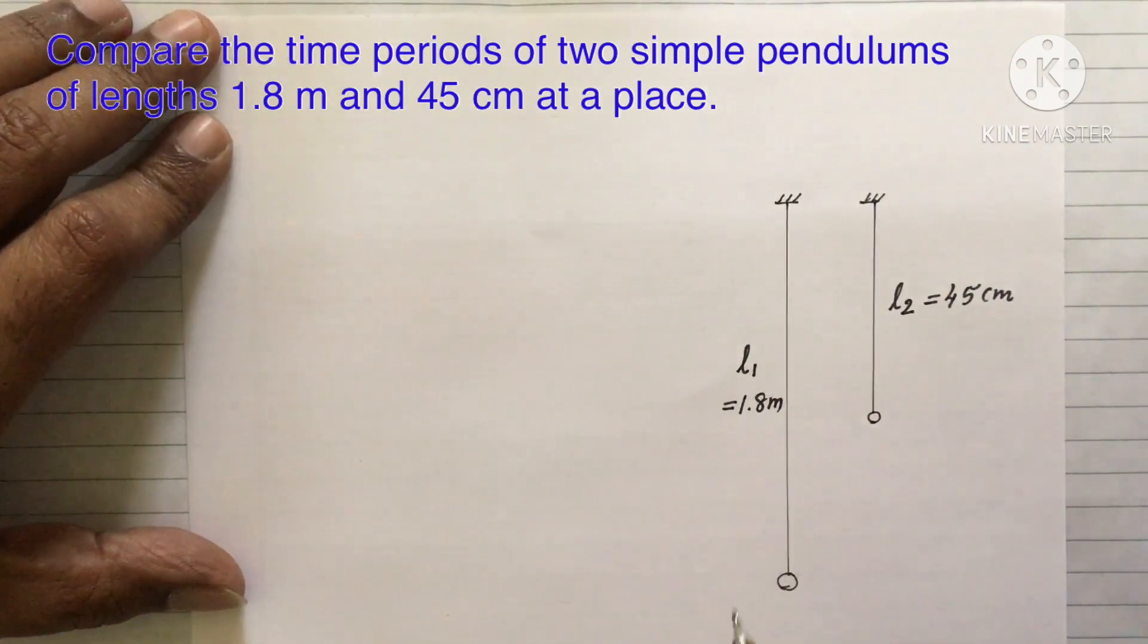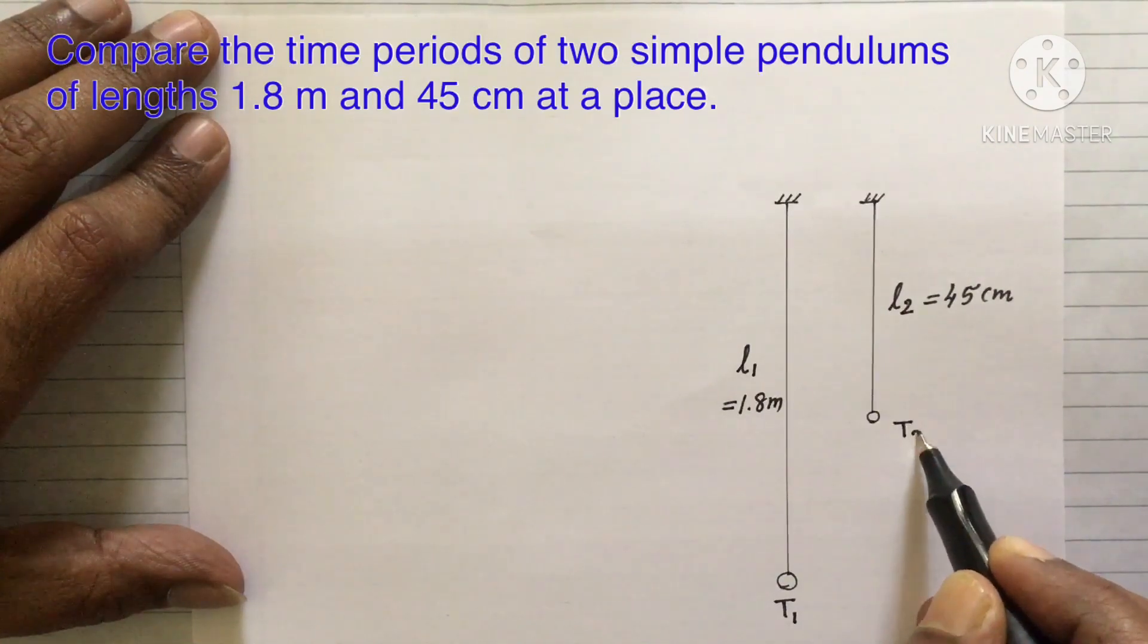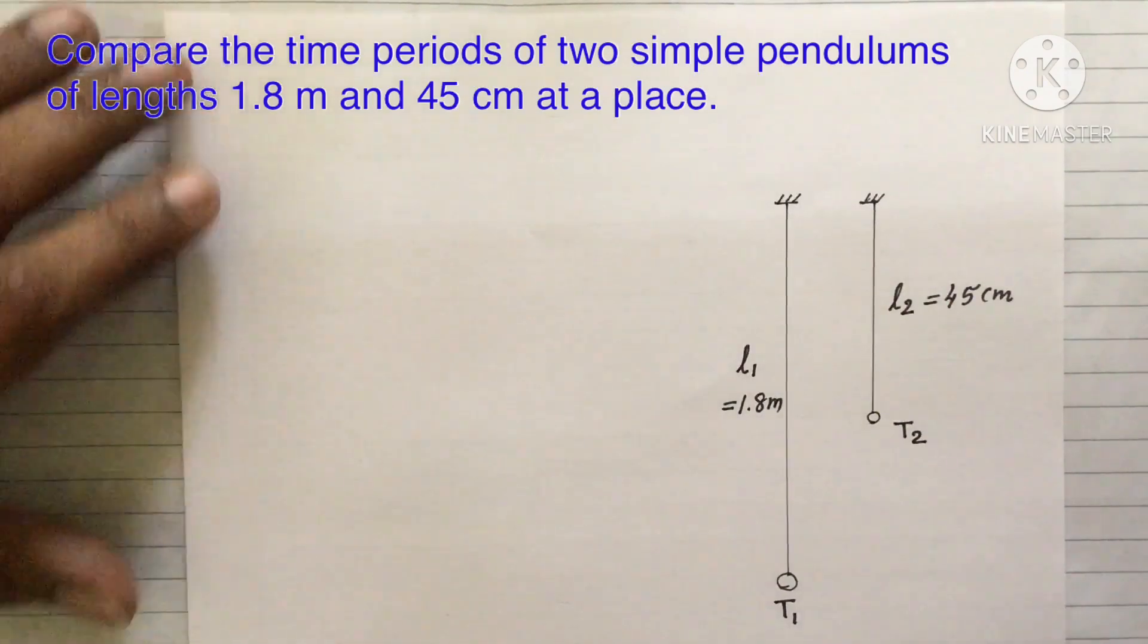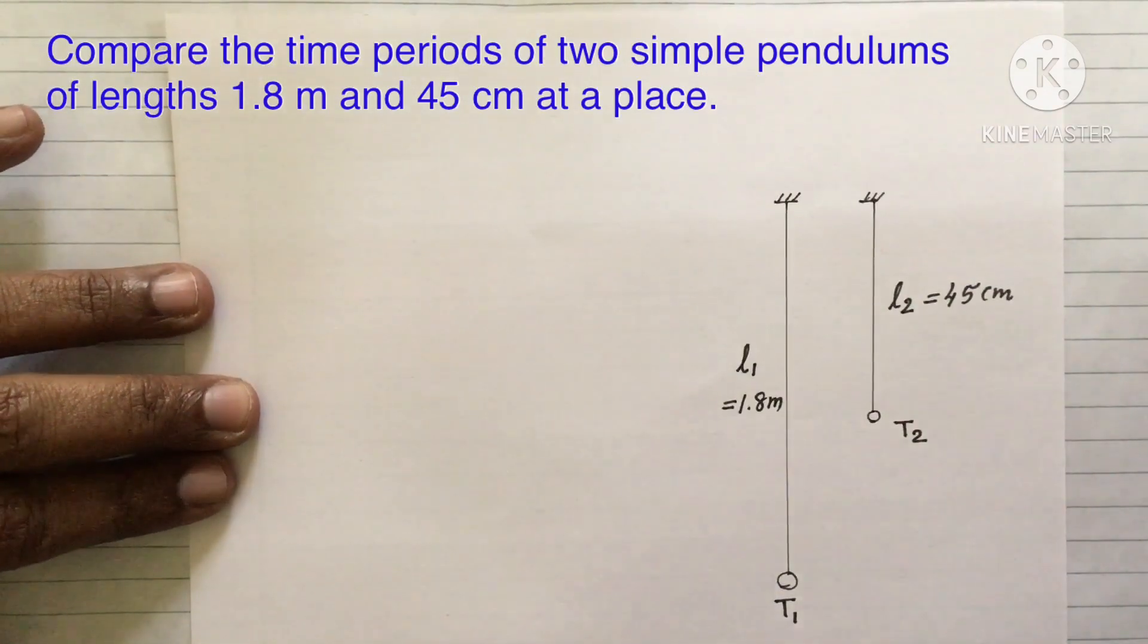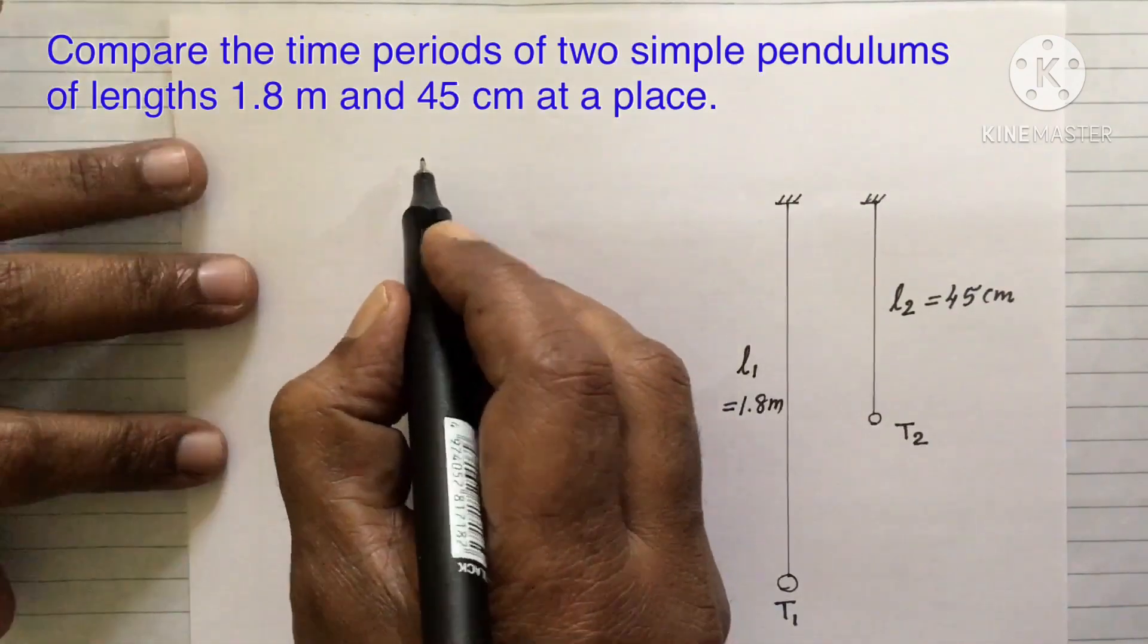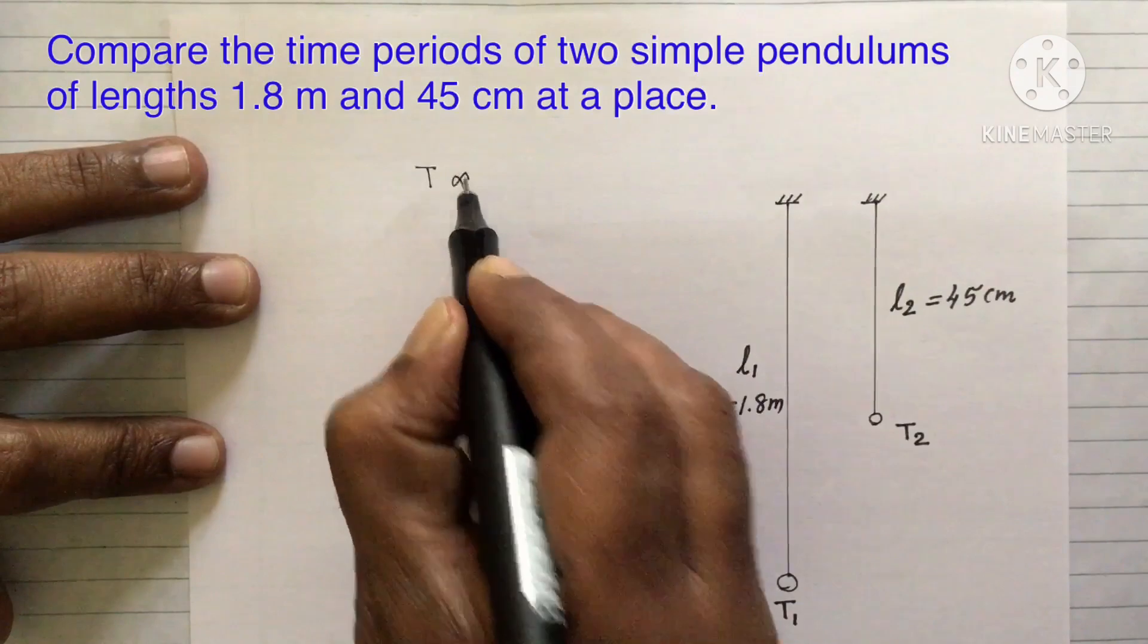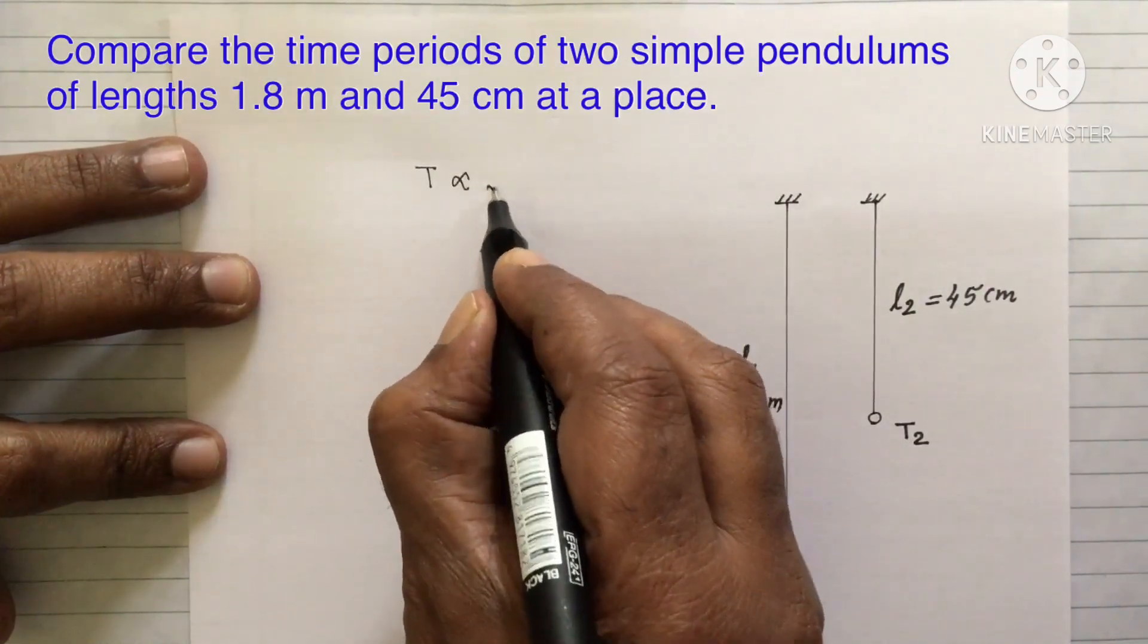Well, time period of first pendulum we can represent it by T1 and time period of second pendulum let it be T2. We have to compare the time periods. We know that time period is directly proportional to square root of length of the pendulum.